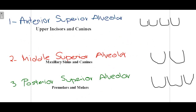For the maxillary teeth, the anterior superior alveolar artery arises from the infraorbital artery and supplies the upper incisors and canines. Next, the middle superior alveolar artery — note that this artery is sometimes present and sometimes absent, so there is variation — supplies the maxillary sinus and canine region. The maxillary sinus is particularly relevant when extracting molar teeth. Lastly, the posterior superior alveolar artery supplies the premolars and molars of the maxillary arch.